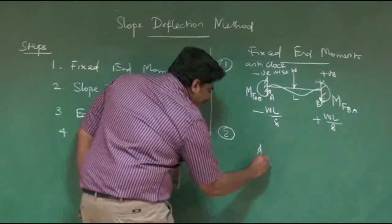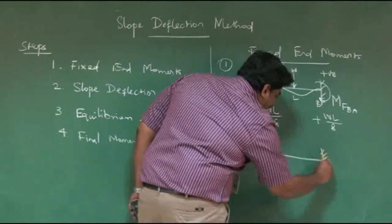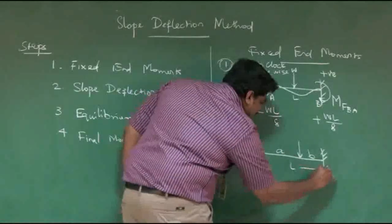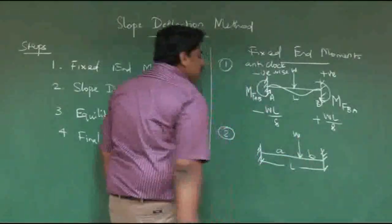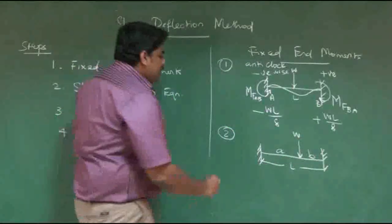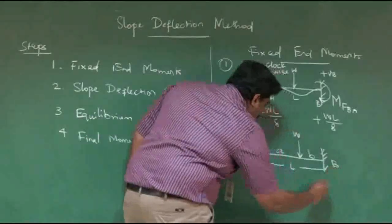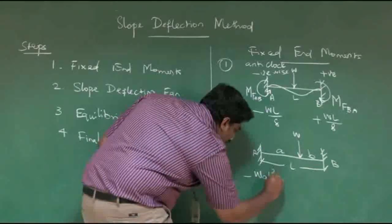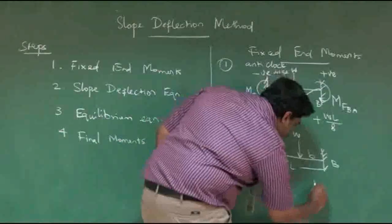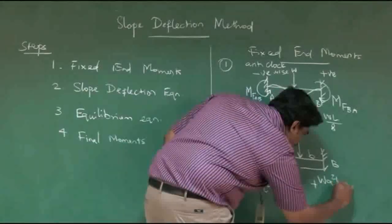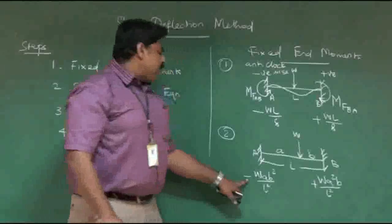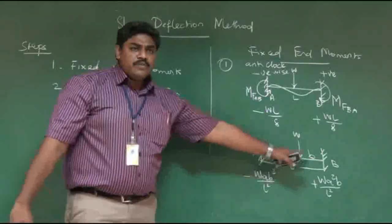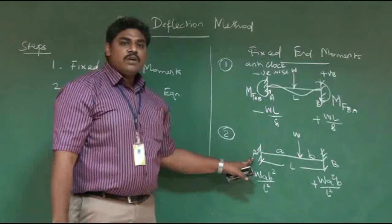The second case is a single span having a point load other than the centre. Assume ends A and B with load W, distance a from A and b from B. The moment at A will be -WAB²/L², and at B it will be +WA²B/L². The negative value comes because of the anti-clockwise moment on the left hand side, and clockwise moment on the right hand side.